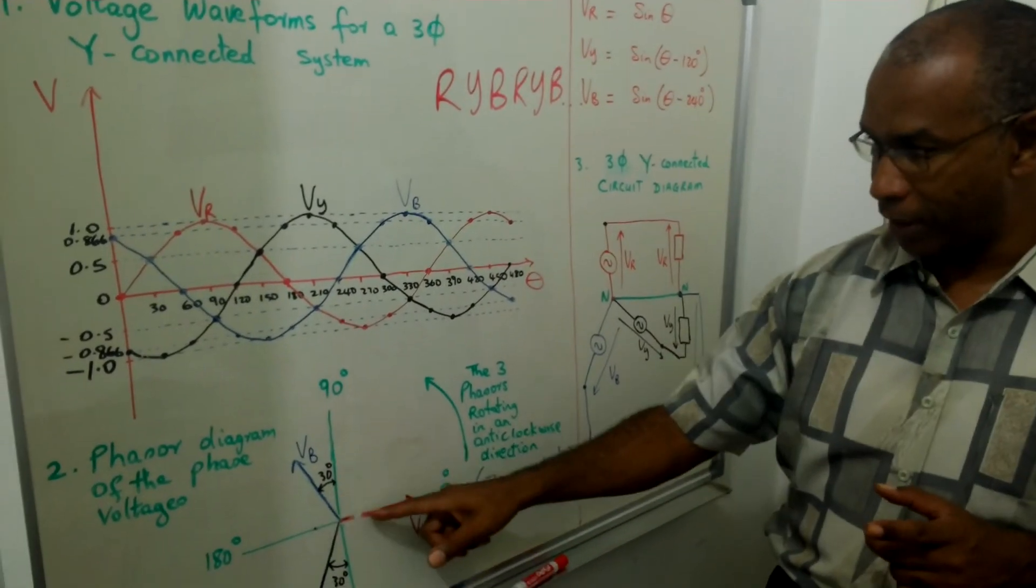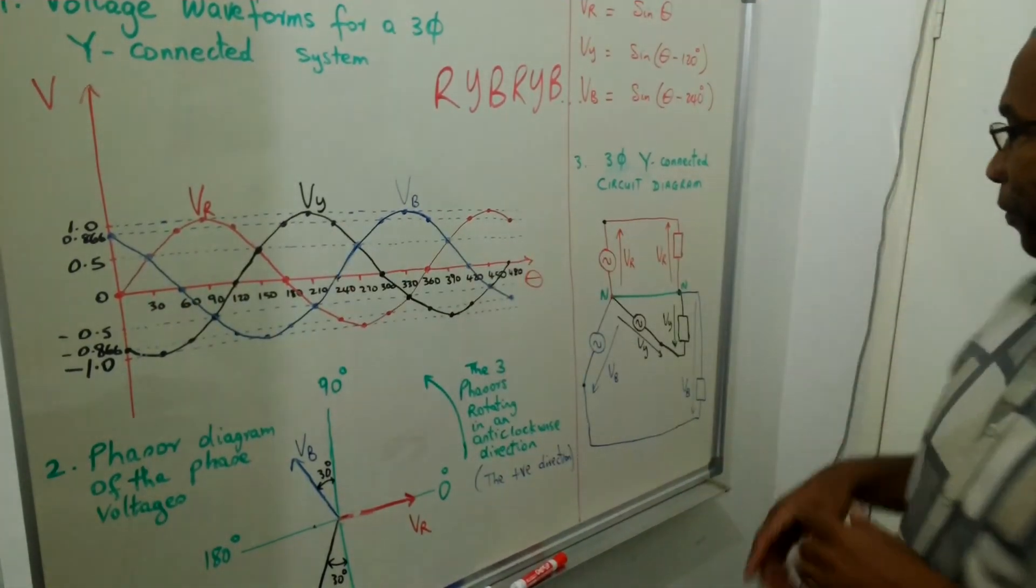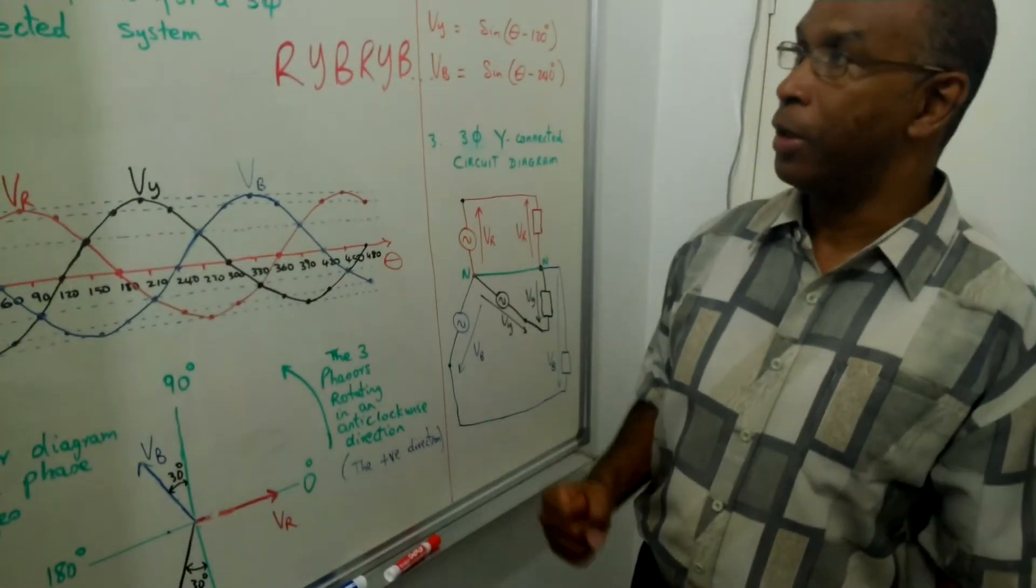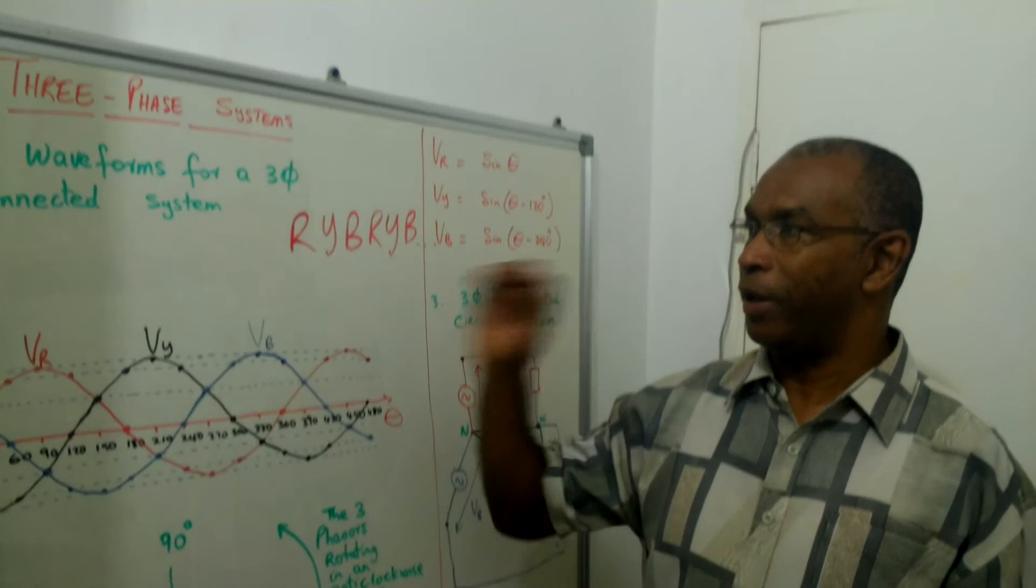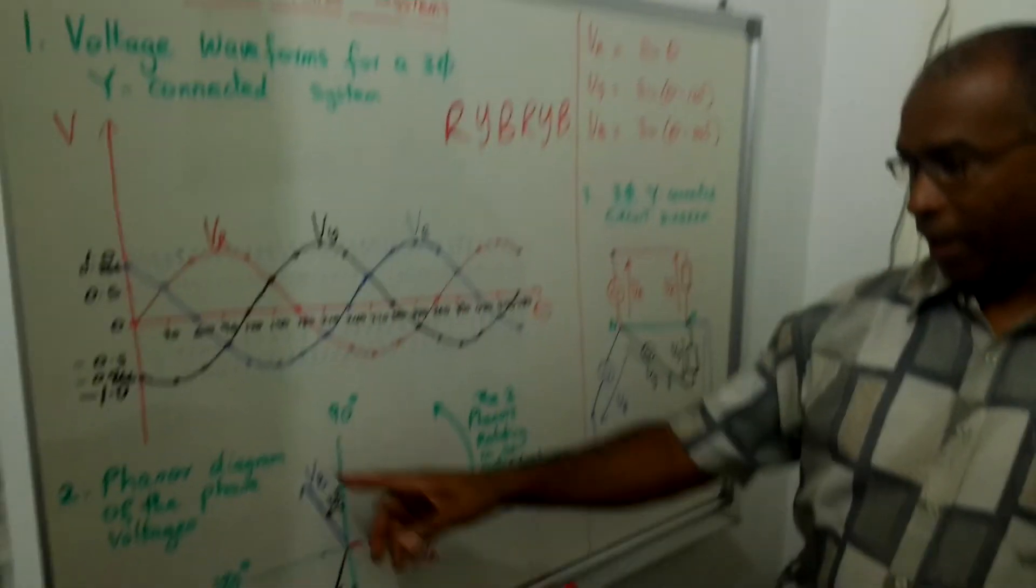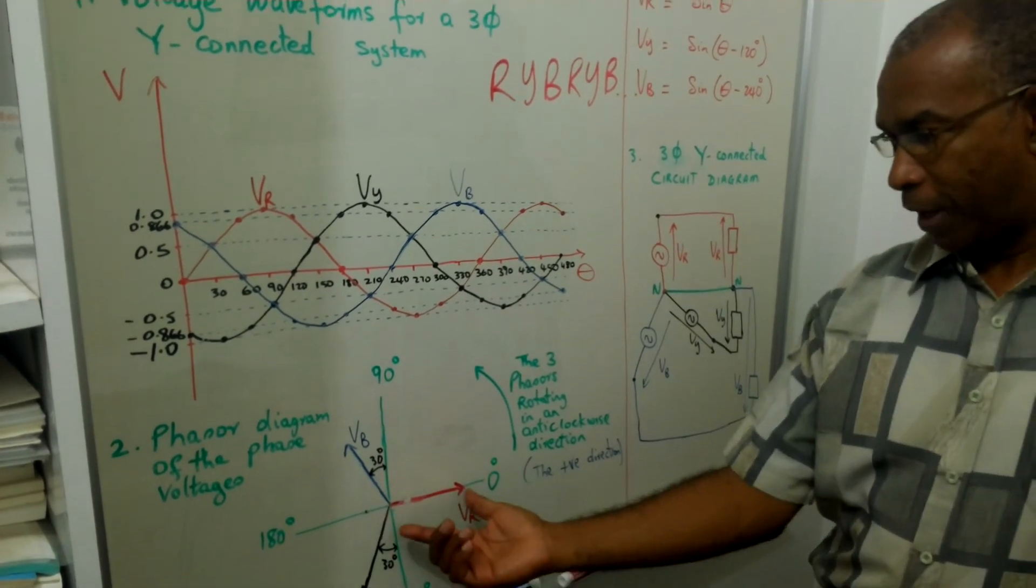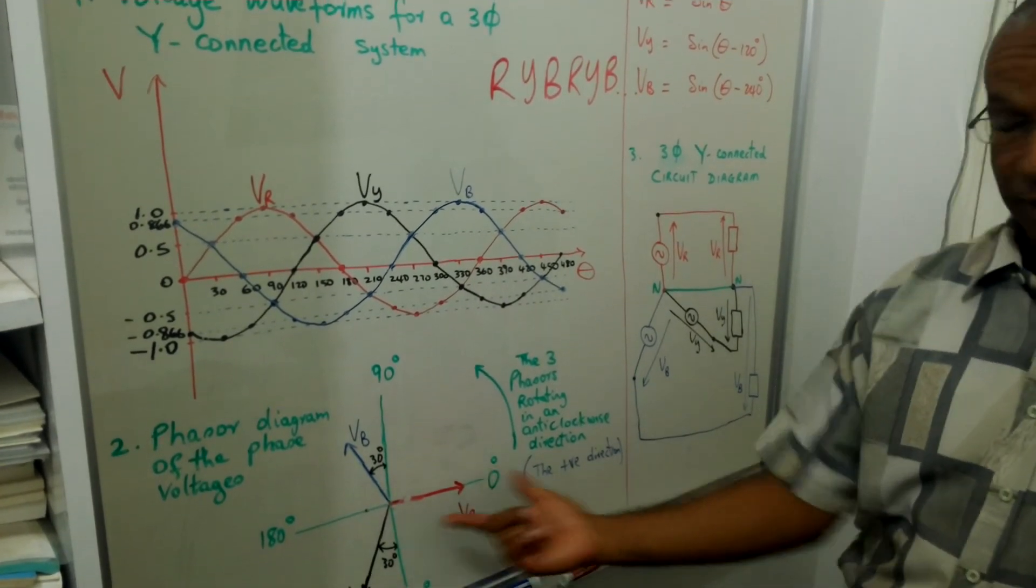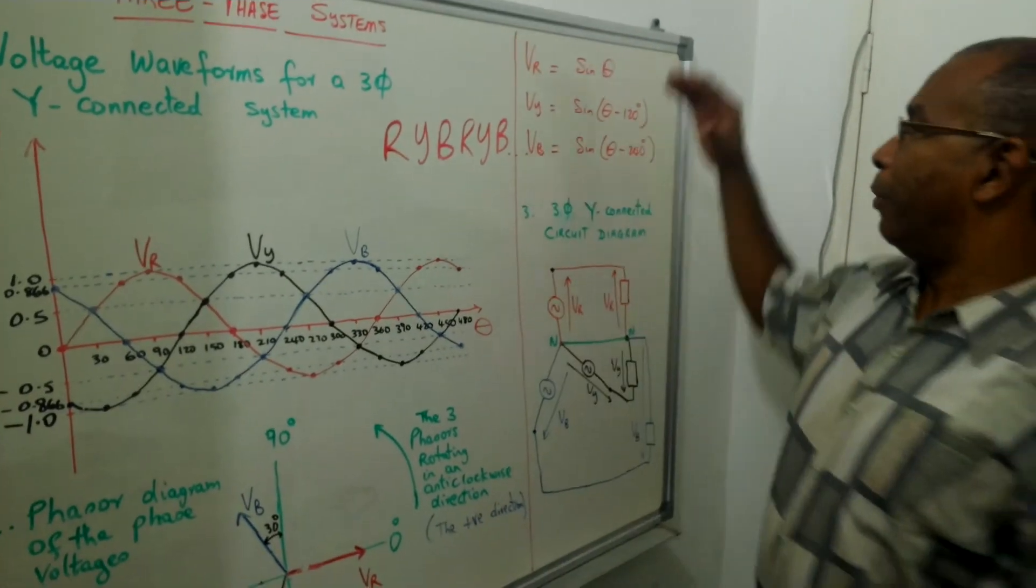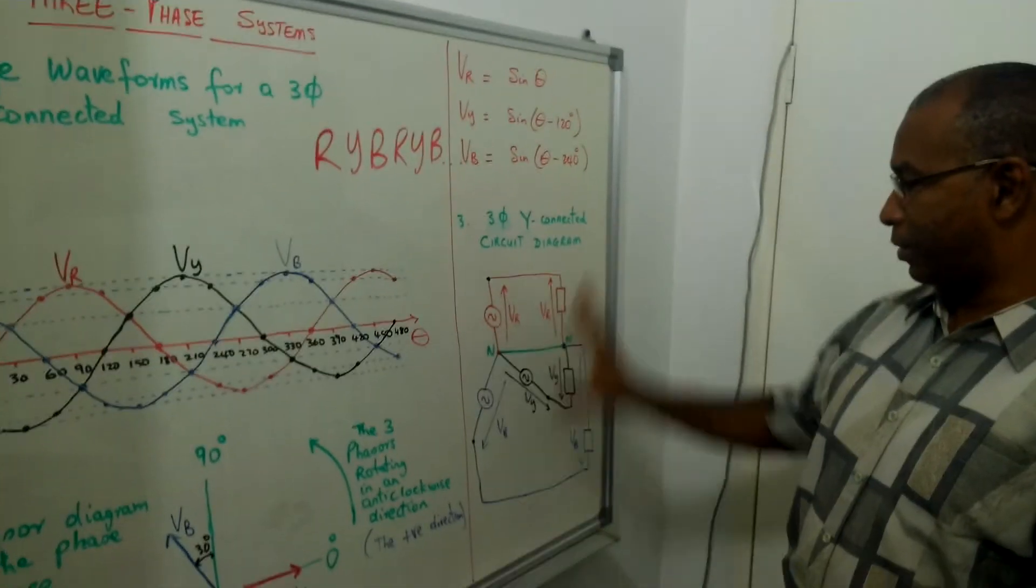So you can see it here on the phaser diagram. You can see it here on the sine wave graph. So that concludes our introduction to three-phase system. We have the waveform in the form of sine waves. We have the phaser diagram in the form of arrows or phasors or vectors as you would recall from maths. And we have the equations. And we have the equation that represents the waveform. And this is a circuit diagram.